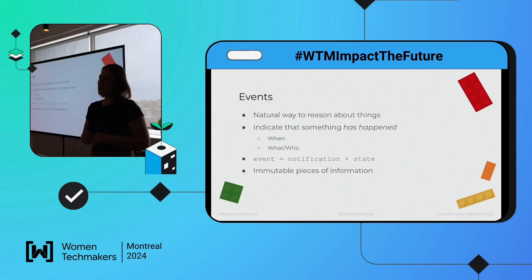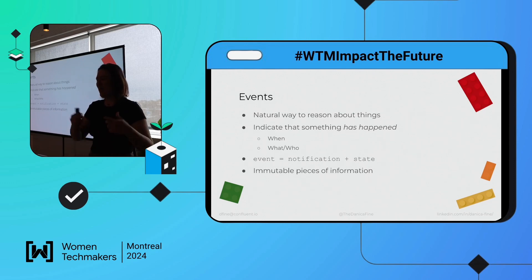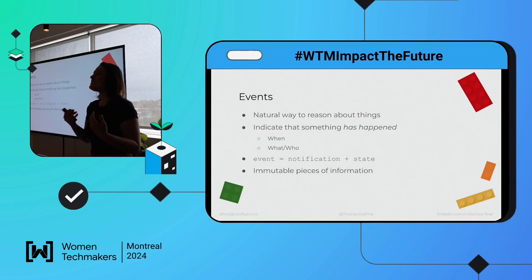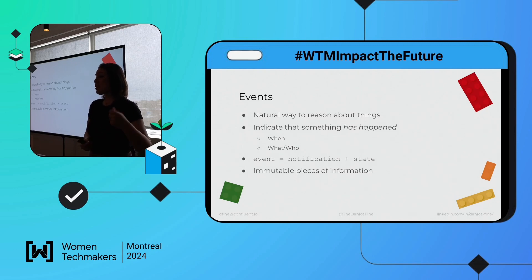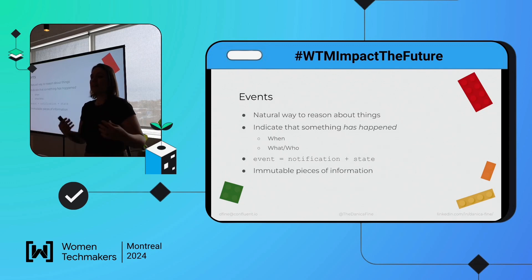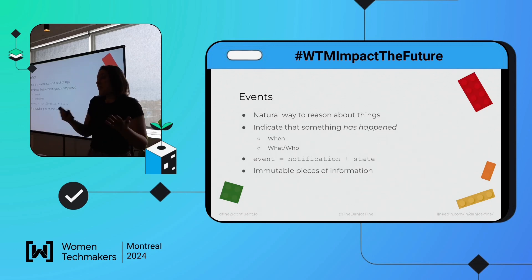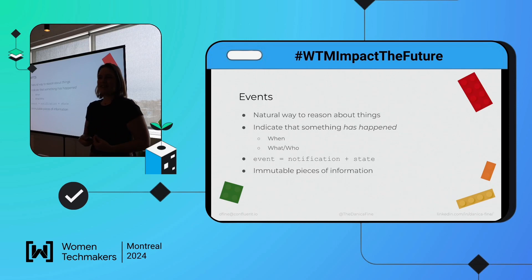Not everyone likes immutability. We like the flexibility to change things and update state in object-oriented programming. But that's at odds with what events are fundamentally — an event is a thing that has occurred in the past. It happened, it's done. I don't have a time machine — I'm not going to go back and undo the fact that I called and ordered 42 pizzas. Maybe I didn't really mean to order 42 pizzas, but I made that order.